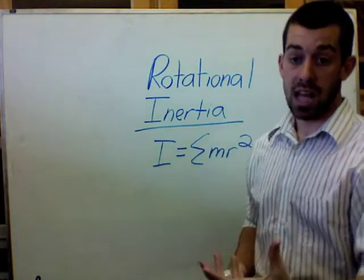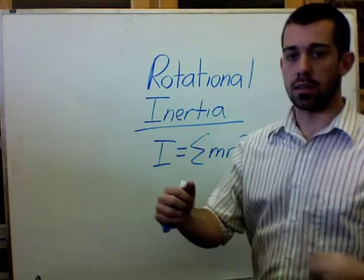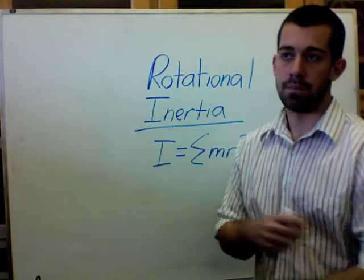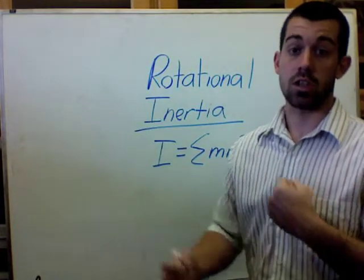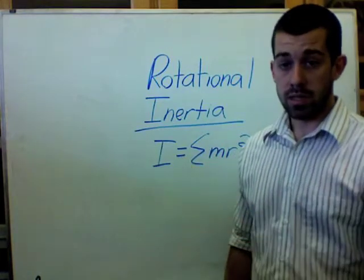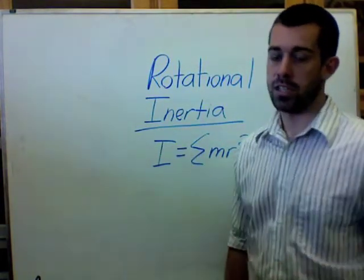So an object with a lot of rotational inertia is going to take a lot of torque to get it spinning, and it's also going to take a lot of torque to slow it down if it's already spinning. And so you should know those things. You should know the effect of rotational inertia.